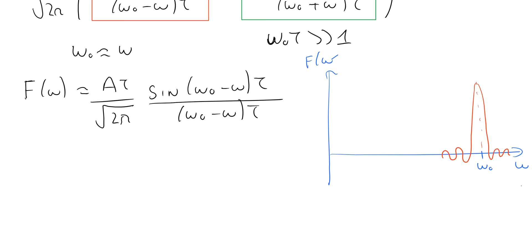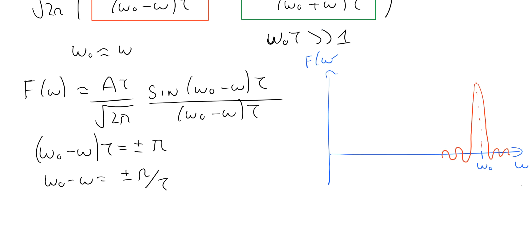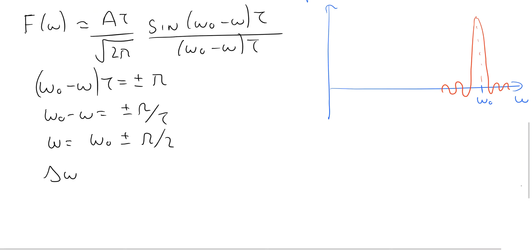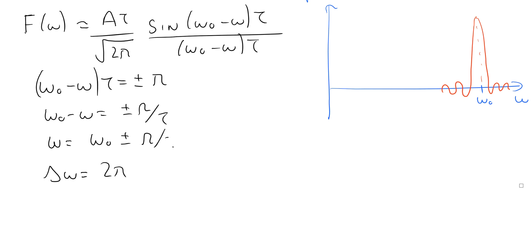We can think about the width of this function. The sinc function first becomes zero when the argument equals plus or minus pi, so (omega-0 minus omega) times tau equals plus or minus pi, giving omega-0 minus omega equals plus or minus pi over tau, and therefore omega equals omega-0 plus or minus pi over tau. The width delta omega, taken as the difference between the first two zeros, equals 2 pi over tau. So the width of the Fourier transform is inversely proportional to tau, the width of the original function.